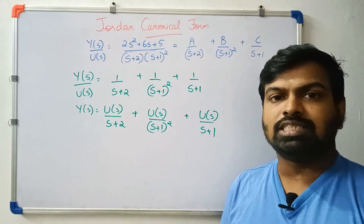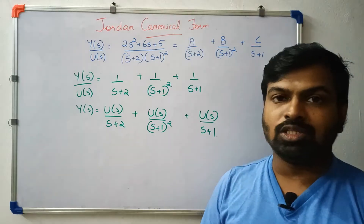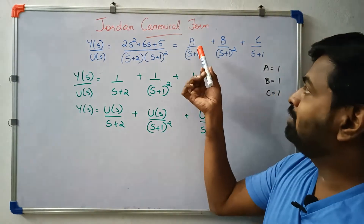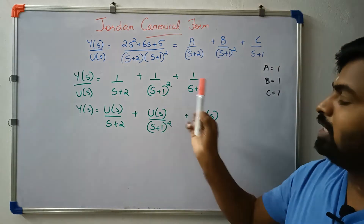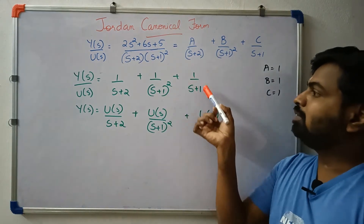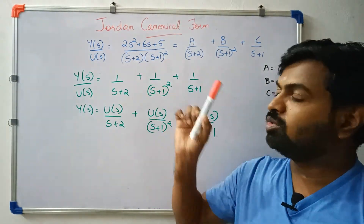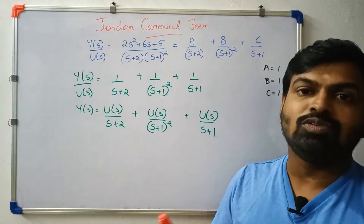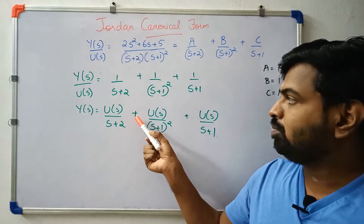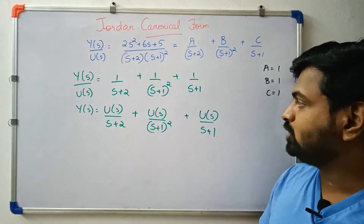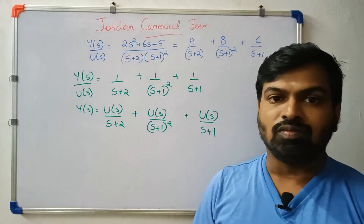So the partial fraction values are A = 1, B = 1, C = 1. The result is: Y(s) = 1/(s+2) + 1/(s+1)² + 1/(s+1).